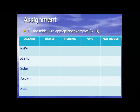These oceans have different characteristics — different water flow systems and different currents. You have to remember which type of current is present in which ocean, which types of gyres are present in which ocean, and which types of species are present in which ocean. Also remember the names of the famous trenches, like Mariana Trench and Java Trench, and which ocean each belongs to.